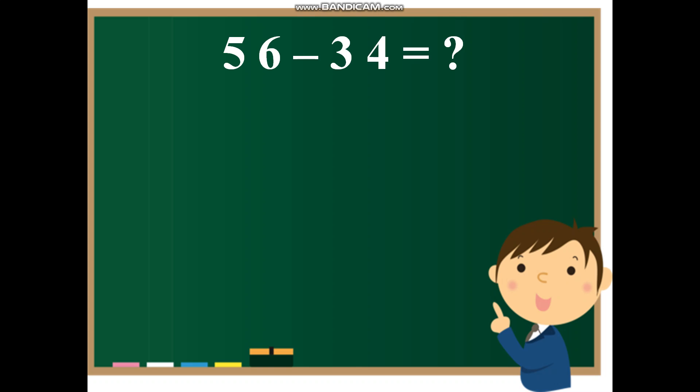So I will have two houses, T for tens and O for ones. Now let us look at the first number, 56.